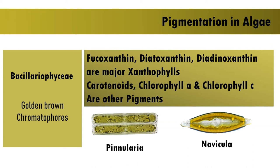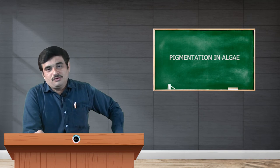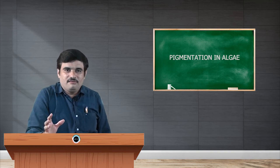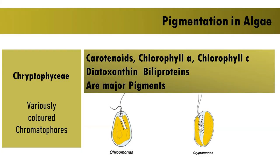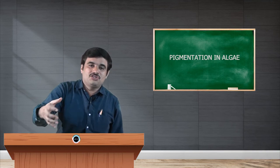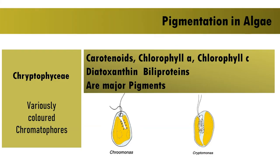Bacillariophyceae includes two distinct types: pennate diatoms and centric diatoms, with Pinnularia and Navicula as examples. Cryptophyceae is a small class famous for its variously colored chromatophores, exhibiting blue, green, orange, and various shades of red. Examples are Chroomonas and Cryptomonas, with carotenoids, chlorophyll a, chlorophyll c, and biliproteins as the pigment compositions.